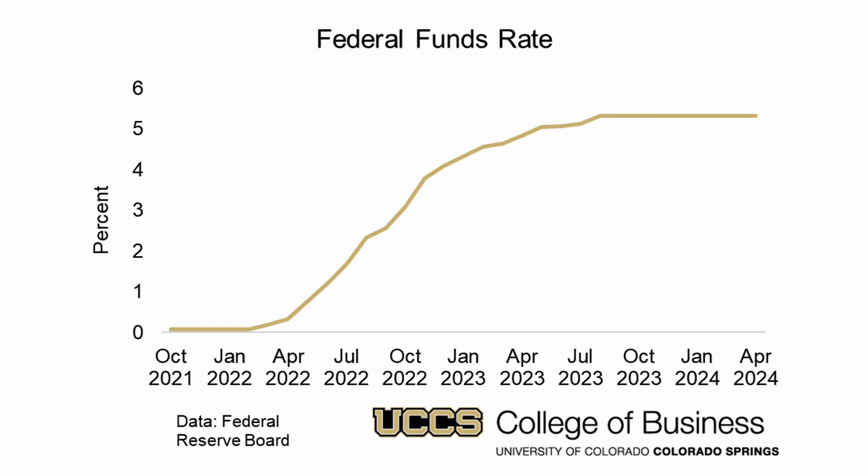The Fed has said they are waiting for the data to give them confidence that inflation is coming sustainably down to their 2% goal before cutting the federal funds rate target. Late last year, it looked like we were on track to get there soon, but the data from the first quarter of 2024 haven't been as encouraging.